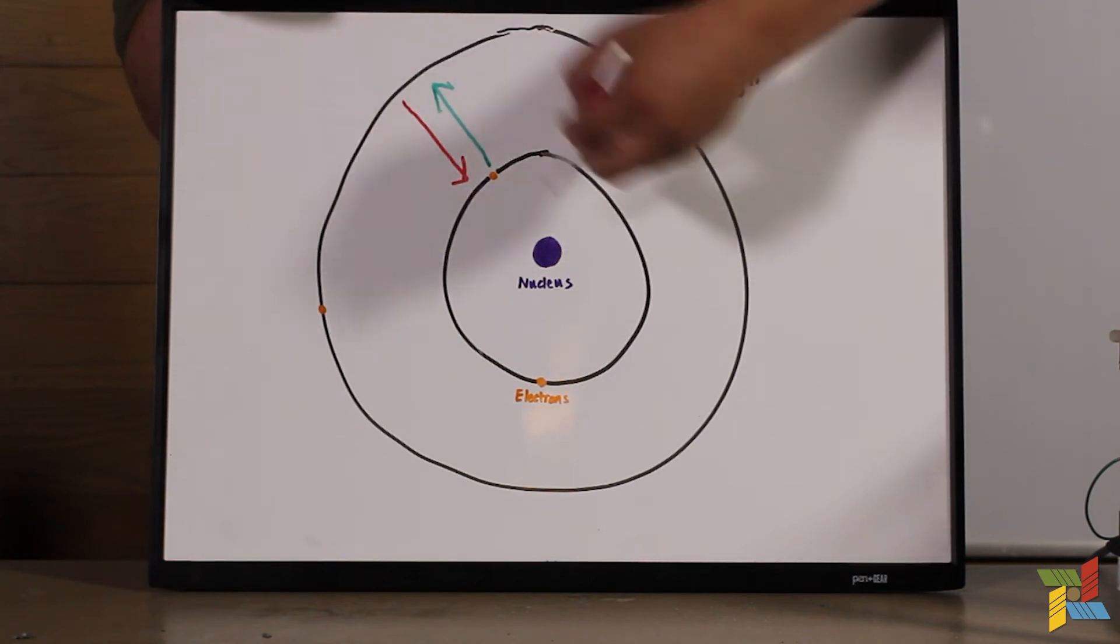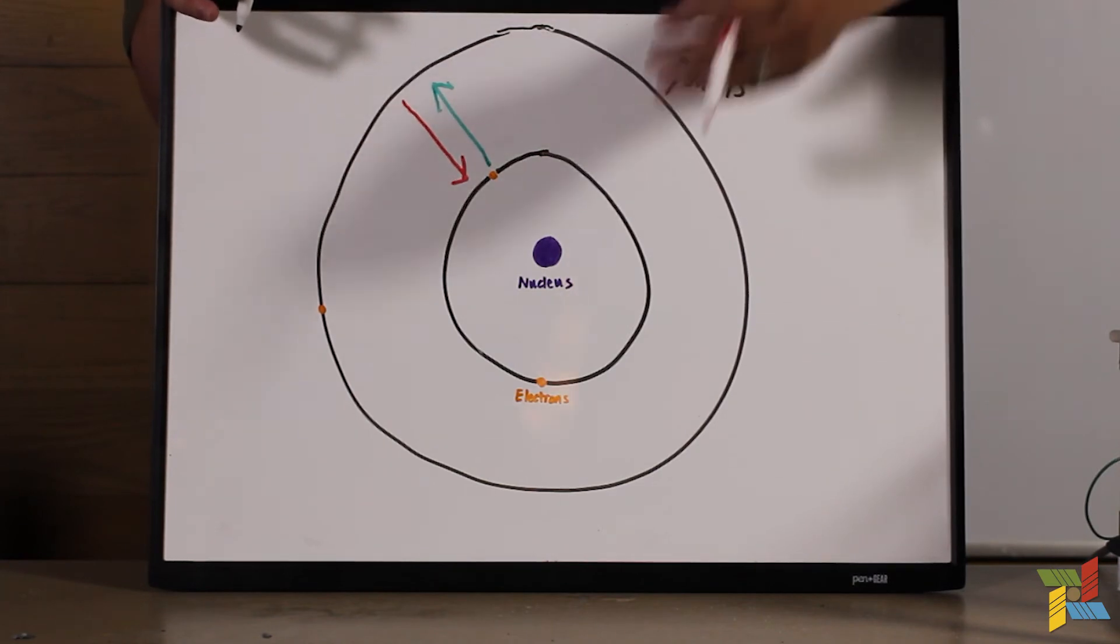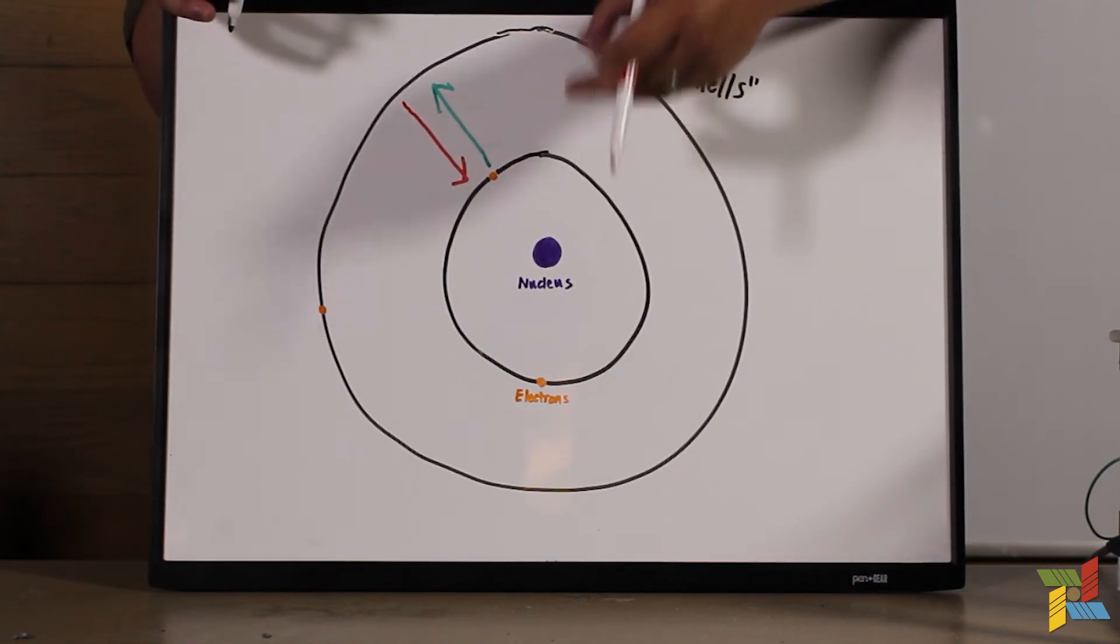And so that just constantly happens inside of a light bulb. And that's why you constantly get light. There's just all this argon gas gaining and losing energy and creating light.